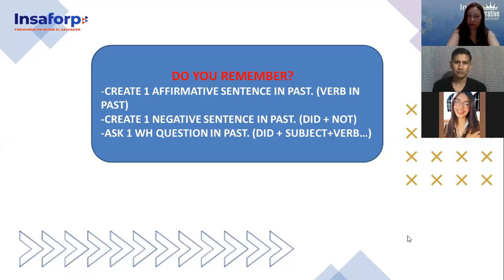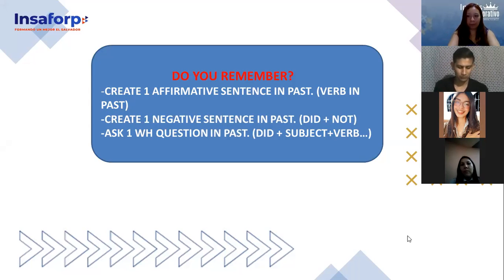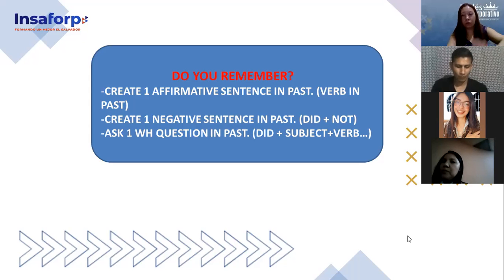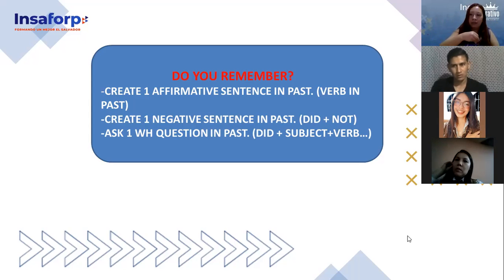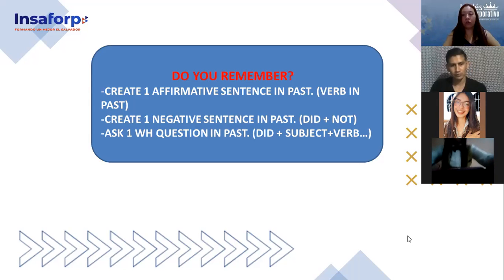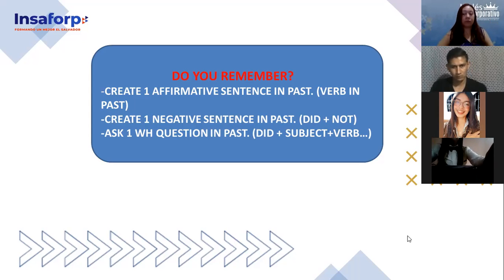Okay, we have a couple of things to do tonight. Before that, we're going to do a review. Last week we started looking at simple past. Who remembers the structure for affirmative sentences? It's just subject, verb in past, and complement. For example, yesterday I ate pupusas for dinner. The past of 'eat' is 'ate.' For affirmative sentences in past: subject, verb in past, complement. So to say 'I ate pupusas,' I say: I ate pupusas last night.